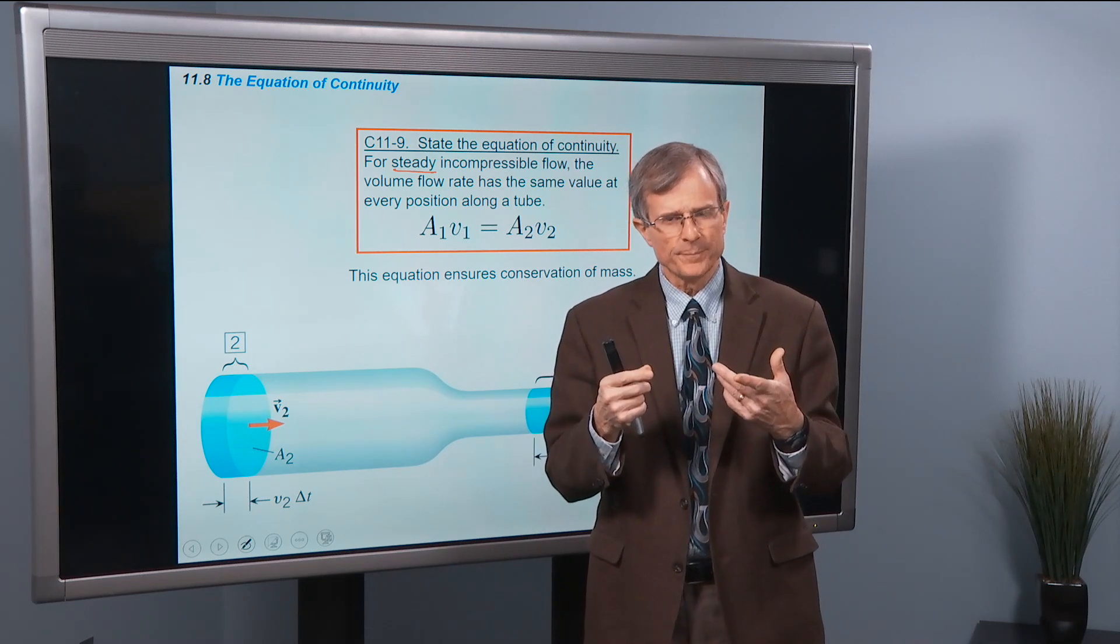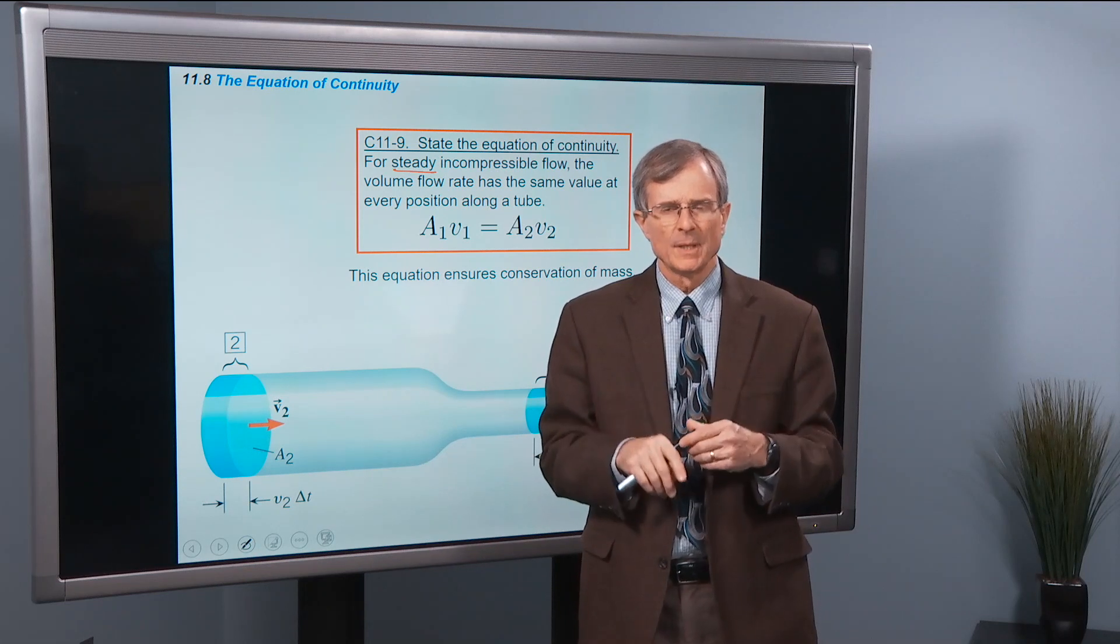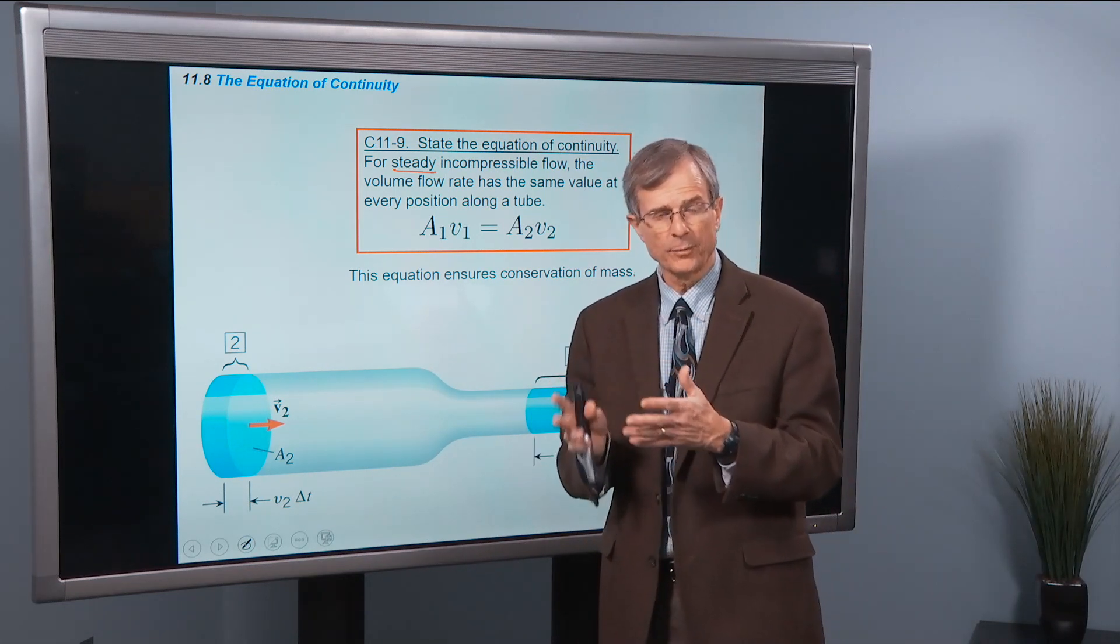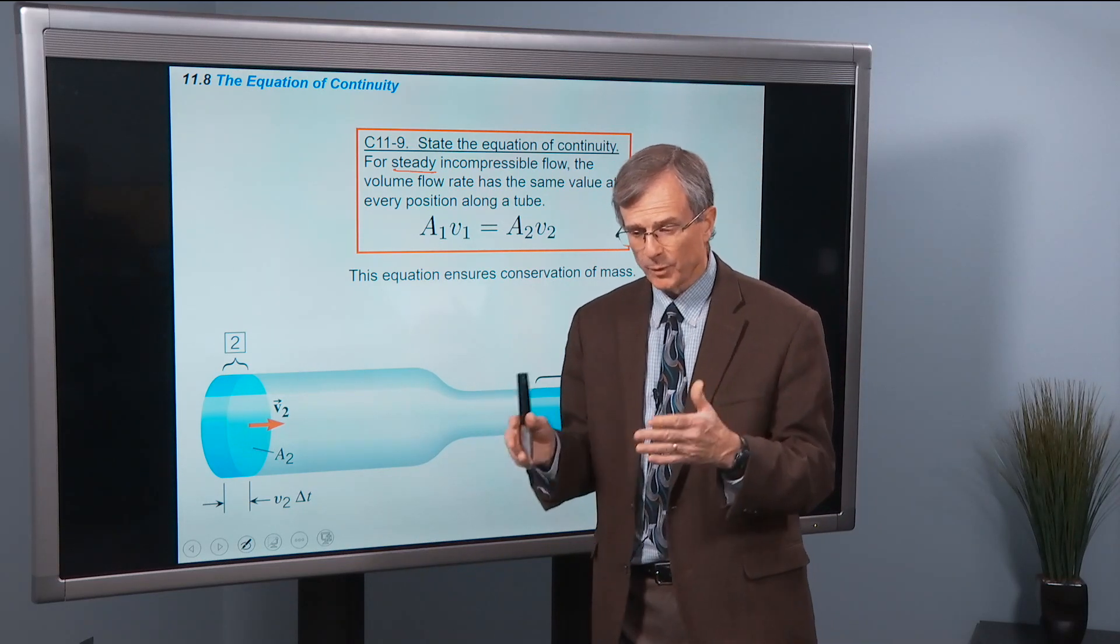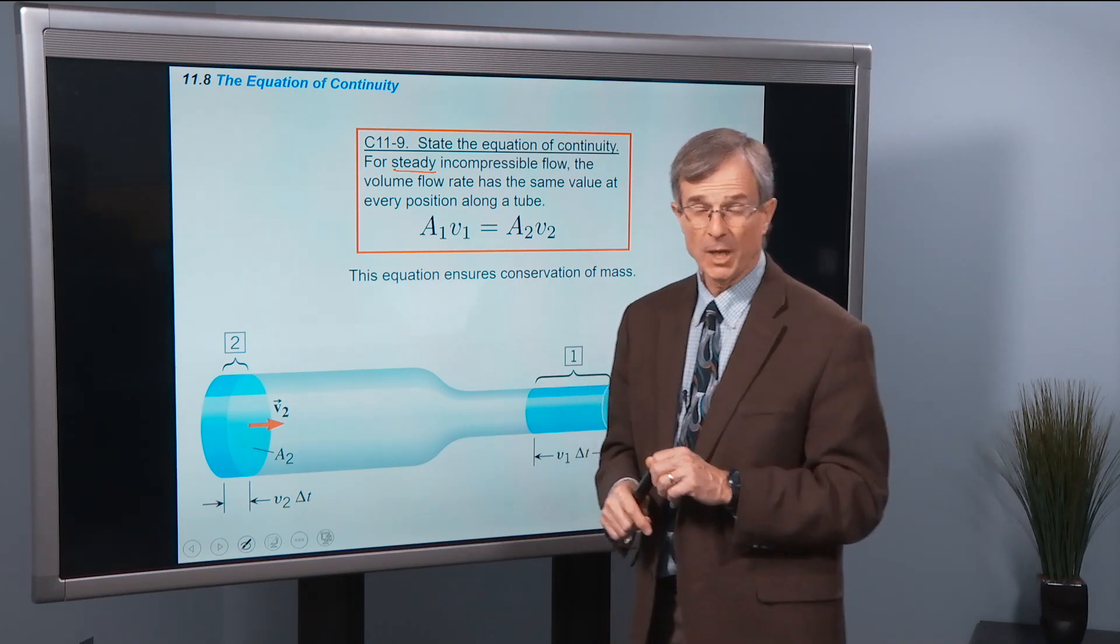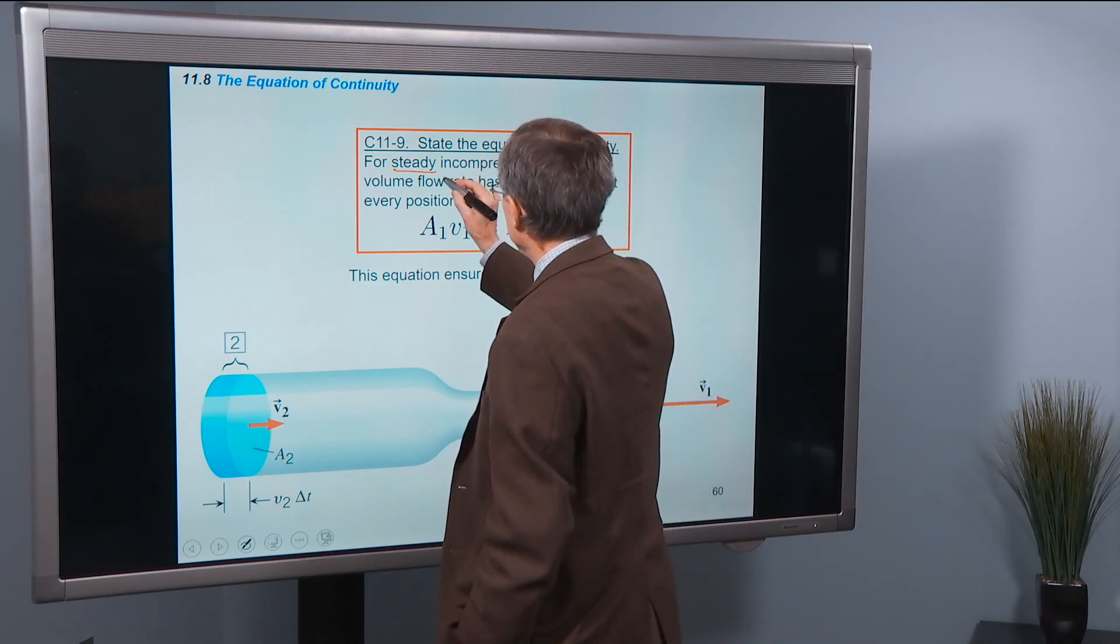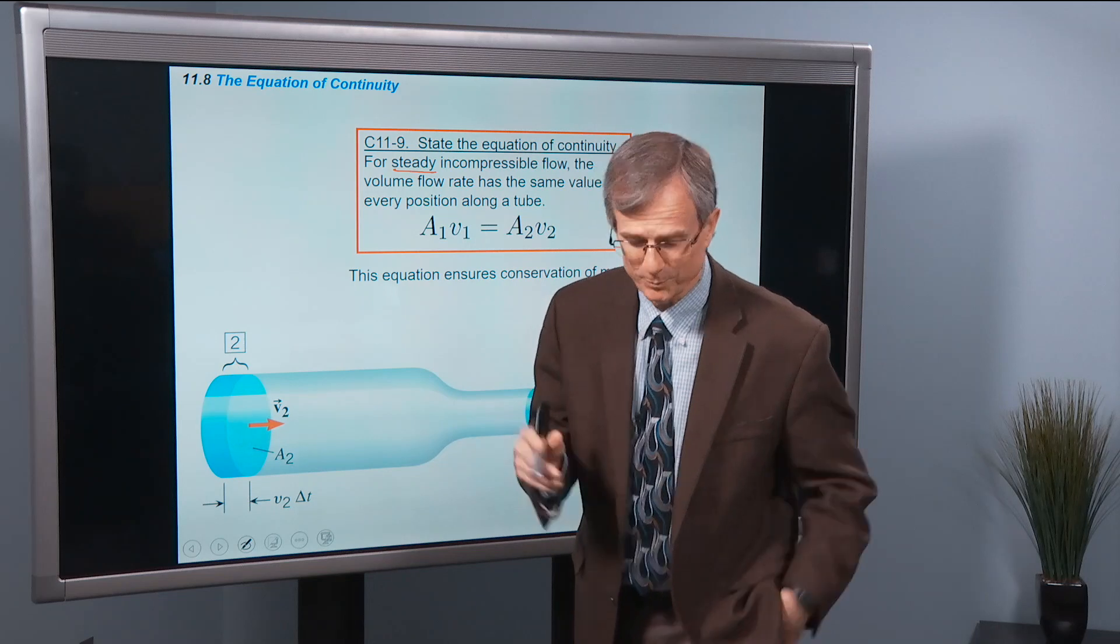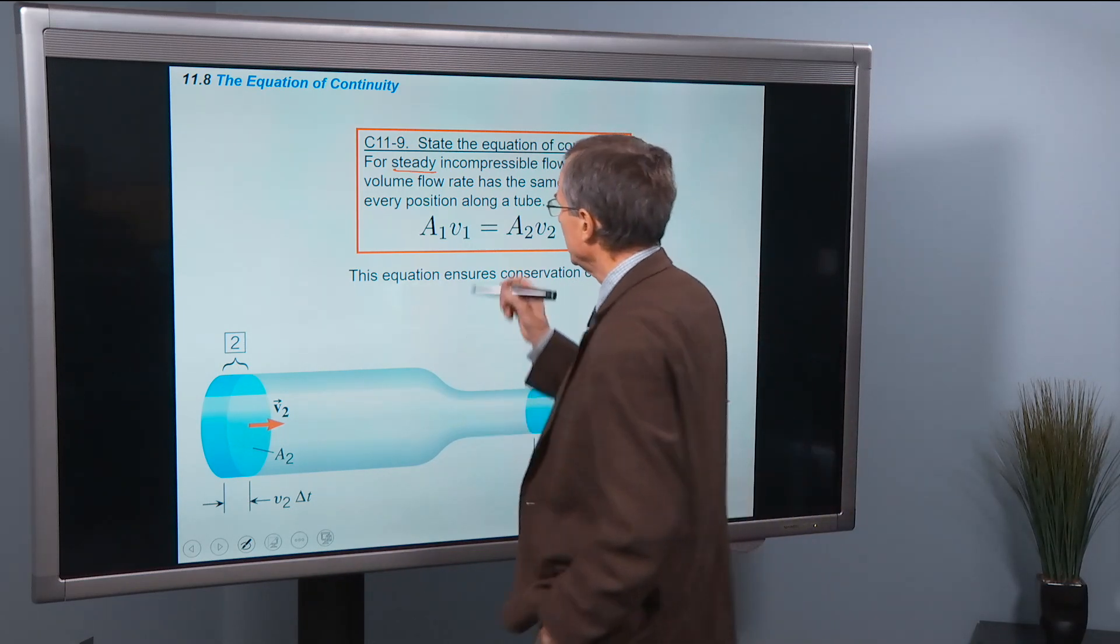Incompressible flow means that you can't compress the fluid. So for almost all intents and purposes, water flows are almost always incompressible. As opposed to air flow, air can be compressed quite easily. For air, the flow is compressible because you can compress air. But for water, it's generally incompressible.